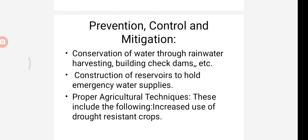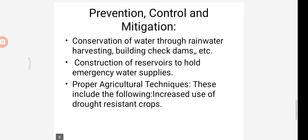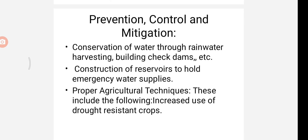How does drought impact the environment? The drought is characterized by the degree of moisture deficiency, its duration, and the size of the area affected. If the drought is brief, it is known as a dry spell or partial drought. Water supply reservoirs become empty, wells dry up and there is acute water shortage. Groundwater levels are also depleted because of less recharge.